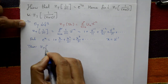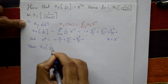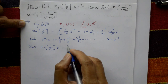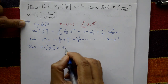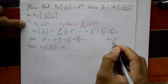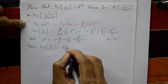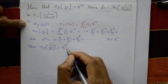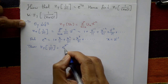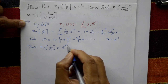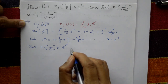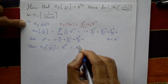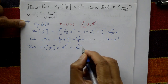Thus the Z transform of 1 upon n factorial is e to the power x, which means e raised to the power Z to the minus 1, or equivalently e raised to the power 1 by Z.